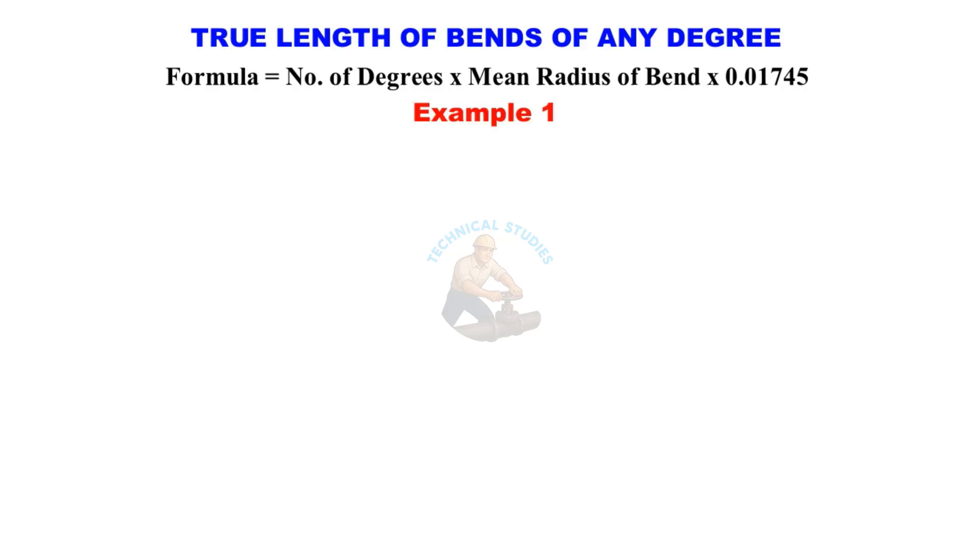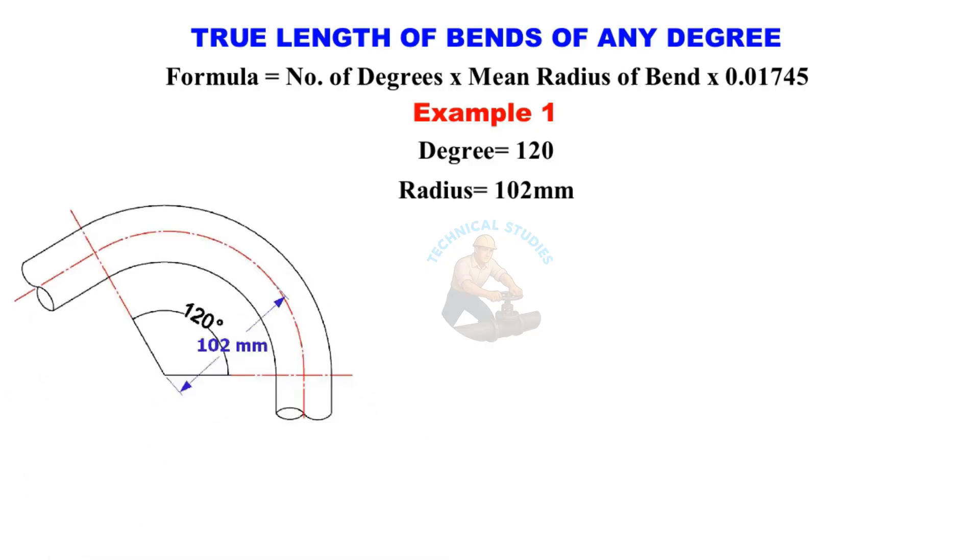Let's try some examples. Example 1: Degree equals 120, radius equals 102 millimeters. True length equals 120 times 102 times 0.01745 equals 213.6 millimeters.